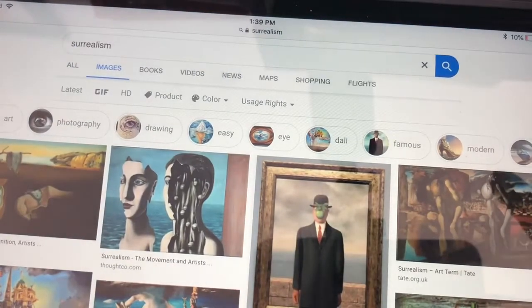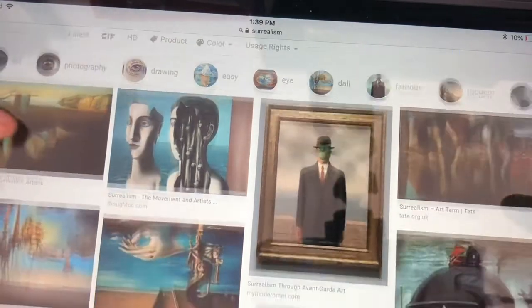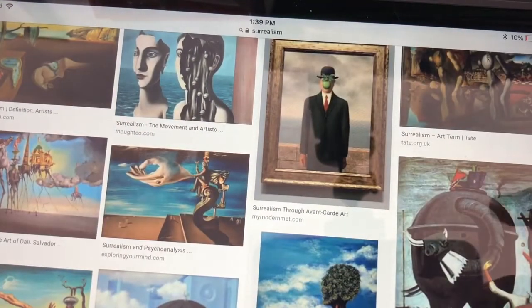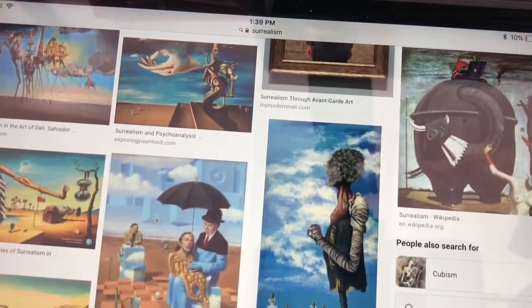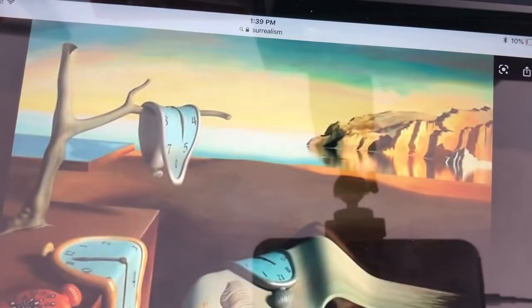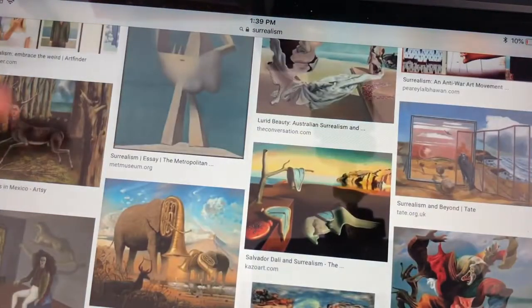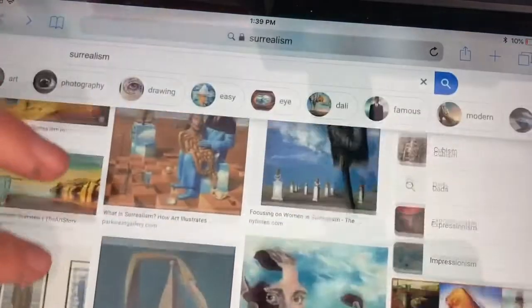Now surrealism was a movement where people thought about something that might be real and then they made it weird. Surrealism is all about kind of turning things and making it different. So we have this guy who has all these melting clocks. Clocks don't melt, right? And so it's kind of thinking around that.